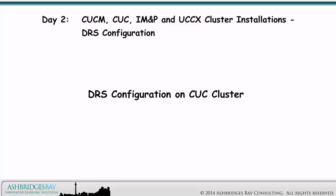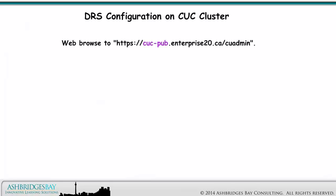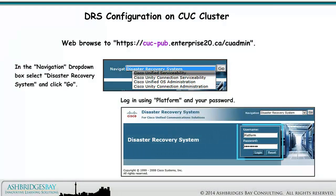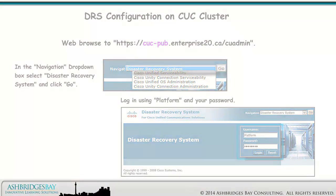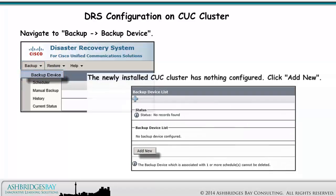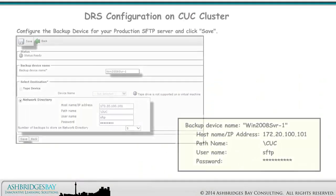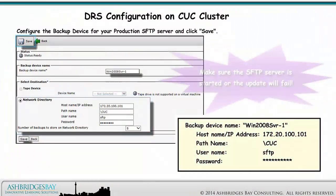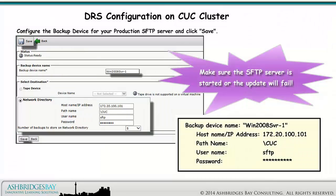Next, we configure DRS for the CUC cluster. Web browse to this address. In the Navigation drop-down box, select Disaster Recovery System and click Go. Log in using Platform and your password. Navigate to Backup > Backup Device. The newly installed CUC cluster has nothing configured. Click Add New. Configure the backup device for your production SFTP server and click Save. Make sure the SFTP server is started or the update will fail.